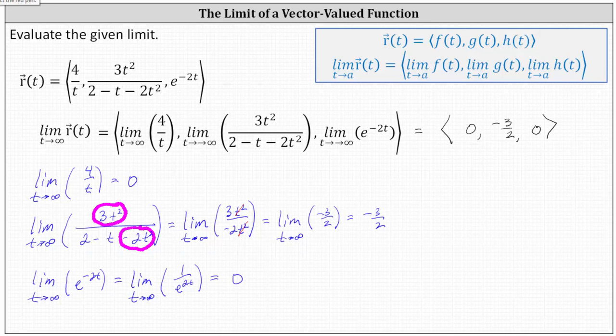The limit as t approaches infinity of the vector-valued function r of t is equal to the vector with an x component of zero, a y component of negative three halves, and a z component of zero. I hope you found this helpful.